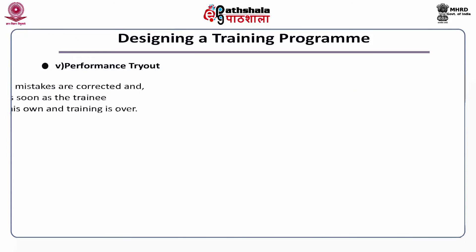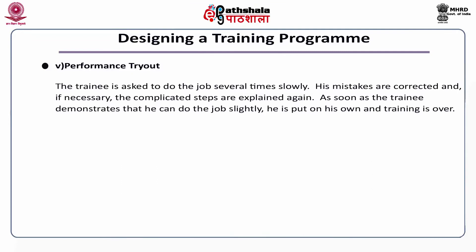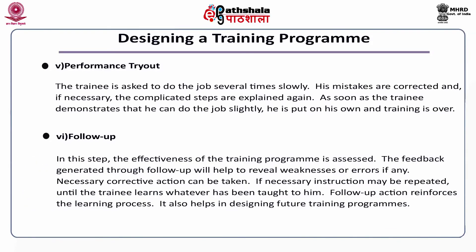The fifth step is performance tryout. The trainee is asked to do the job several times slowly. Mistakes are corrected and, if necessary, the complicated steps are explained again. Once the trainee demonstrates that he can do the job correctly, he is put on his own and the training is over. The last step is follow-up, where the effectiveness of the training program is assessed. The feedback generated through follow-up helps reveal weaknesses or errors. Necessary corrective action can be taken, and instructions may be repeated until the trainee learns what has been taught. Follow-up action reinforces the learning process.